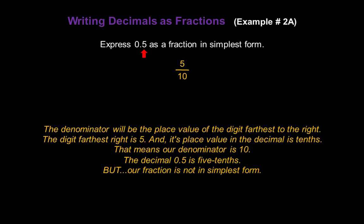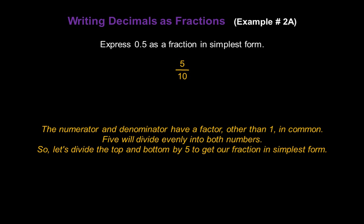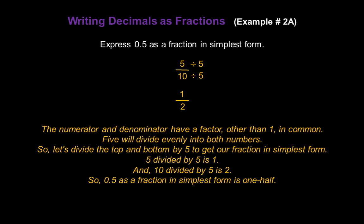But we're not done because our fraction is not in simplest form — the numerator and denominator have a factor other than 1 in common. 5 will divide evenly into both numbers, so let's divide the top and the bottom by 5. 5 divided by 5 makes our numerator 1, and 10 divided by 5 makes our denominator 2. So 0.5 as a fraction in simplest form is 1 half.